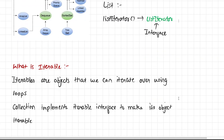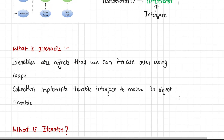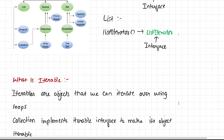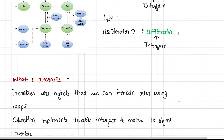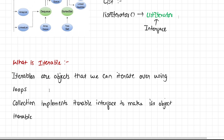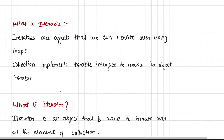Now let's answer: what is iterable? Iterables are basically objects that we can iterate over using loops. A collection implements the iterable interface to make its object iterable, so that we can iterate over the elements. Although iterable is an interface, collection implements it so that it can make its elements iterable. This is how object-oriented programming works.